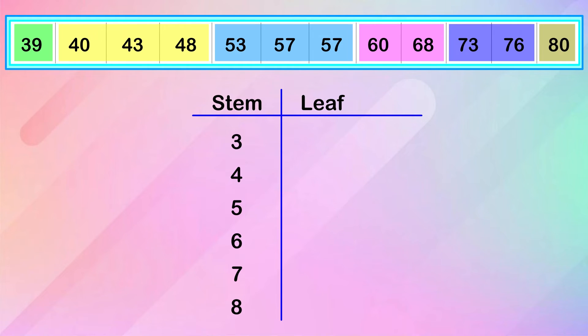We'll now fill out the leaves. Let's take a look at our table. Our first data value is 39 degrees Fahrenheit. We have the stem 3, and we'll write 9 as our leaf. Our next value is 40 degrees Fahrenheit. The stem is 4, and the leaf is 0. The third value is 43. We'll add another leaf, 3, to the stem 4.